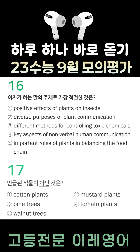Last, plants communicate to warn other plants and defend their territory. Walnut trees spread toxic chemicals to hurt or kill plants nearby. It's their way of saying, 'Stay away from me.'